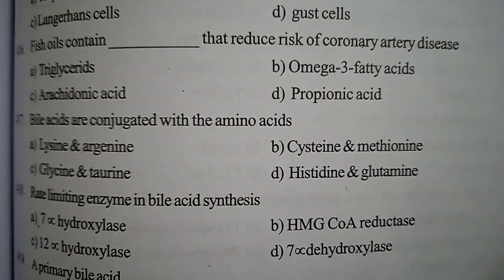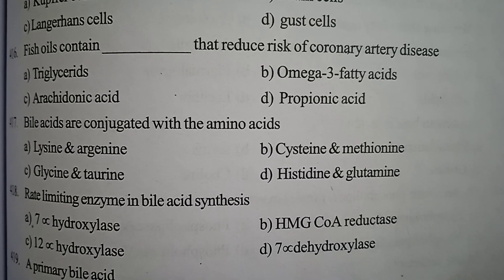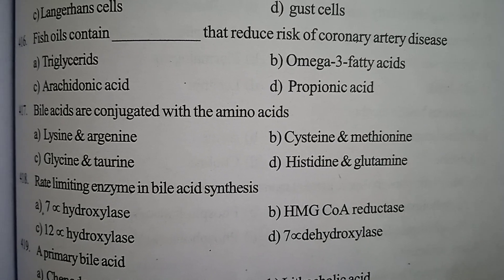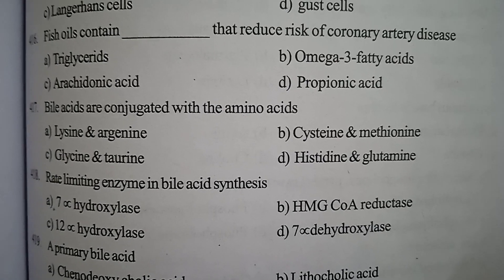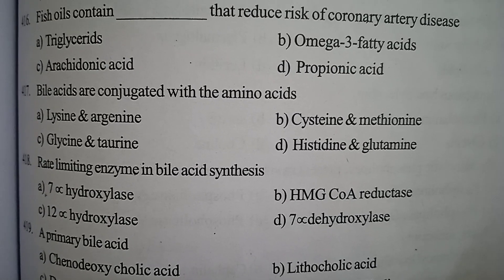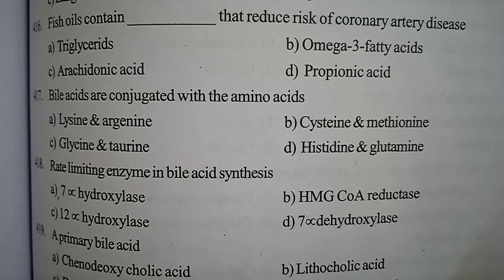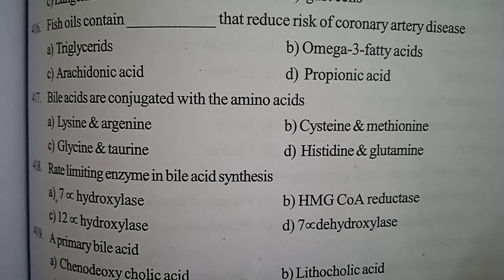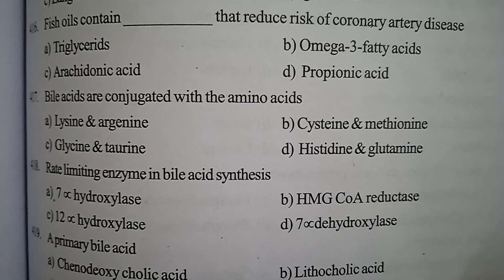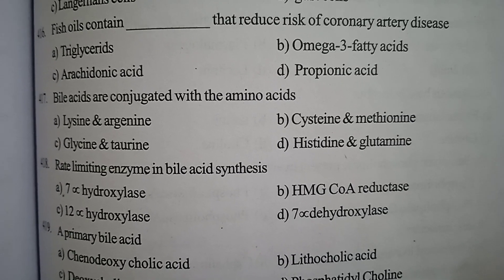Next one: fish oils contain what that reduces risk of coronary artery disease — option A TG, option B omega-3 fatty acid, option C arachidonic acid, option D propionic acid. Correct answer: option B, omega-3 fatty acid, which reduces risk of coronary artery disease.